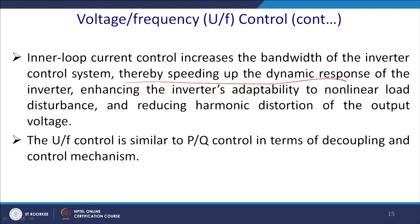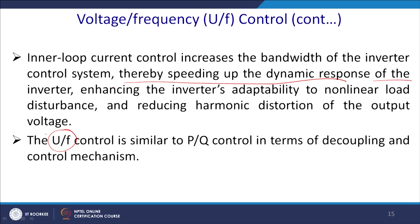The inner current loop increases the bandwidth of the inverter control system since the switching frequency is high — for example, if operating at 10 kHz, the bandwidth is 10 kHz while the supply frequency is 50 Hz, so it can act a thousand times faster. This enhances the inverter's capability to handle non-linear load disturbances and reduces harmonic distortion of the output voltage and other power quality issues. V/F control is similar to PQ control in terms of DQ decoupling, but V/F is applied for islanding mode while PQ control is applied for grid-connected mode.